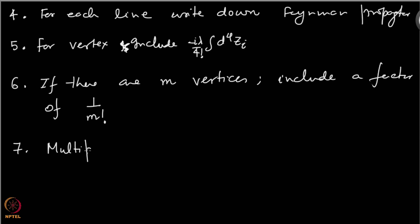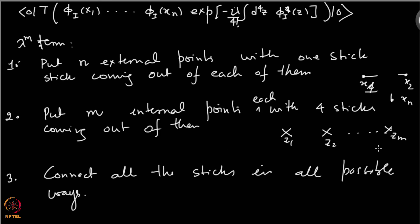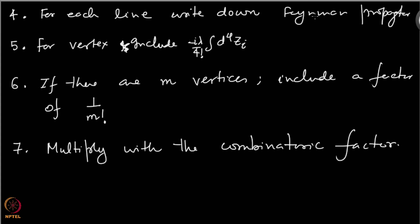So in principle we now have an expression for the numerator in terms of Feynman propagators and numerical coefficients, and these Feynman propagators have to be integrated over the internal points. At least in principle, we have the result for this object at any order in lambda — whatever order in lambda you want, you can write down those expressions, or just draw the Feynman diagrams which contain the same information. We will continue the discussion more on Feynman diagrams in the next video.